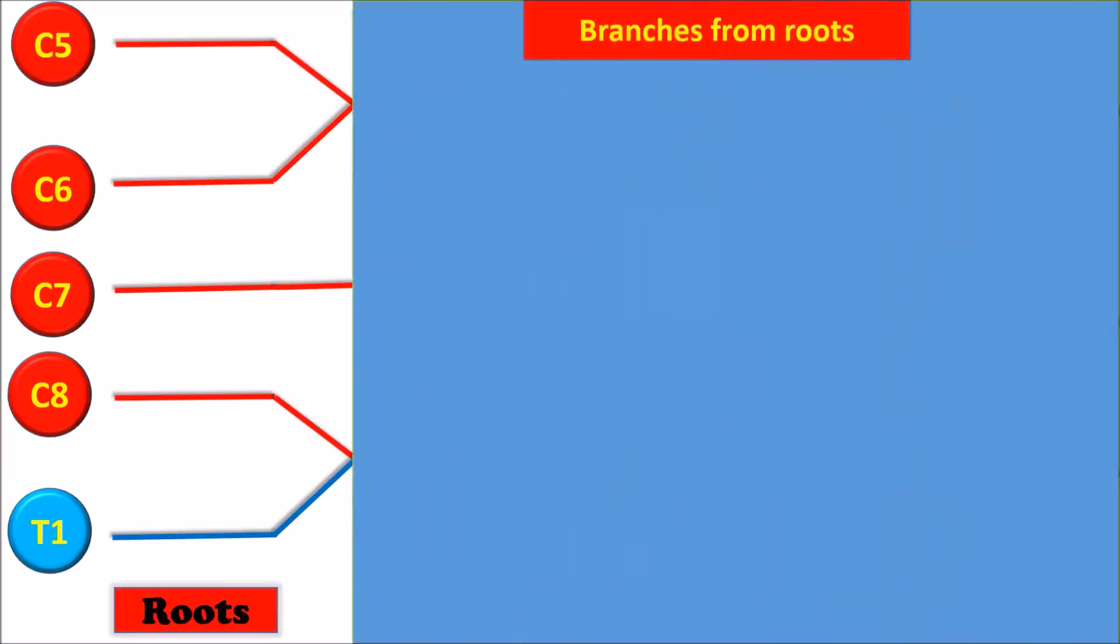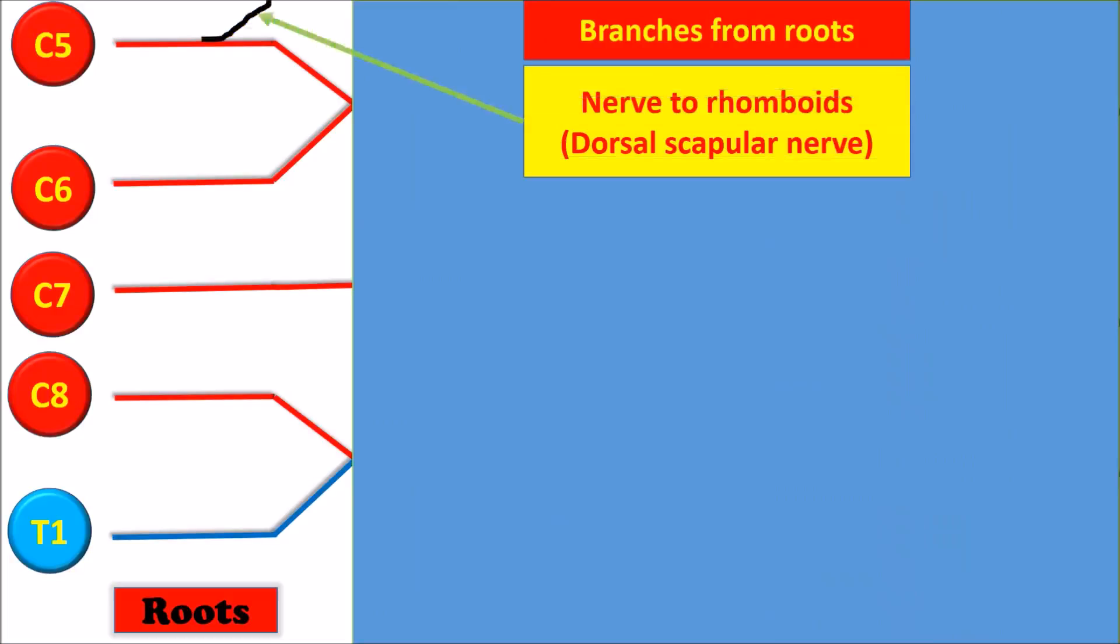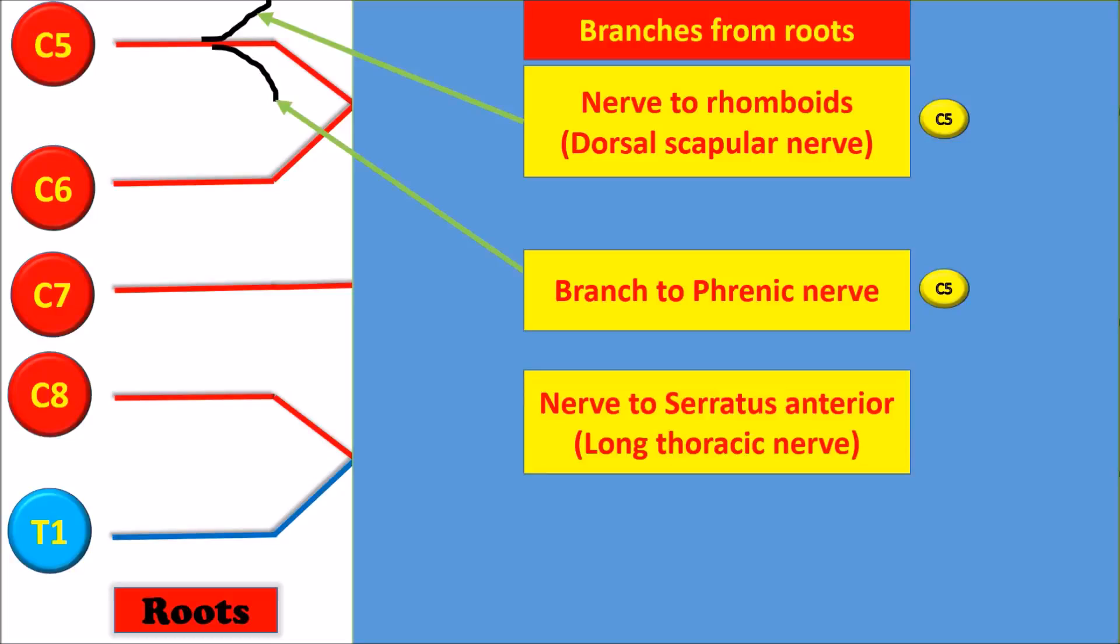Nerve to rhomboidus, that is dorsal scapular nerve, arises from the root C5. The root C5 also gives a branch to the phrenic nerve. Nerve to serratus anterior, that is long thoracic nerve, arises from the roots C5, C6, and C7.